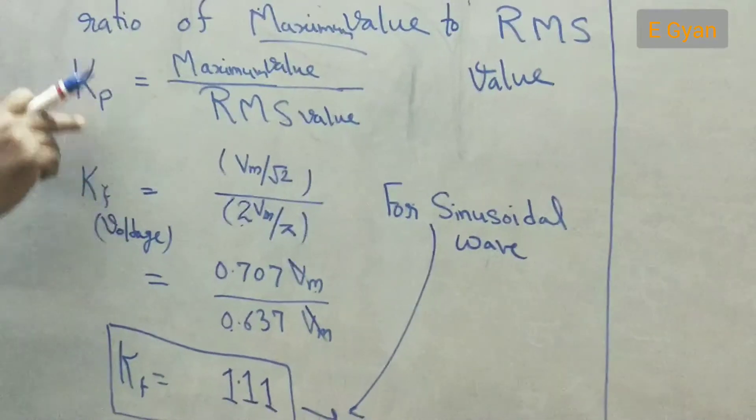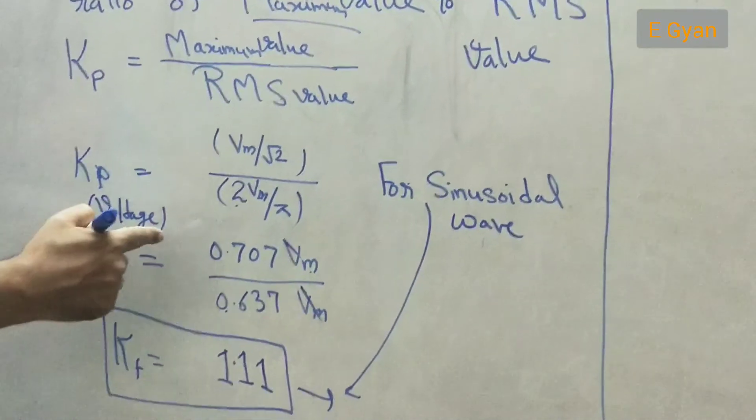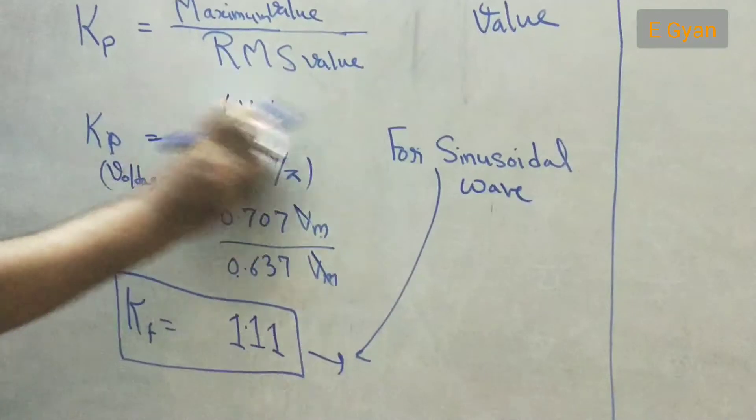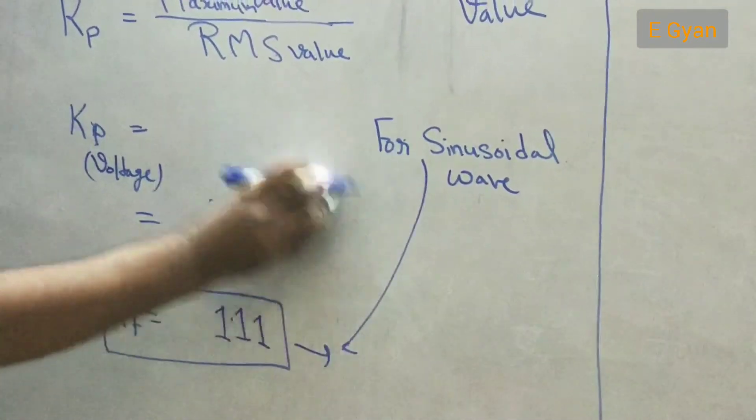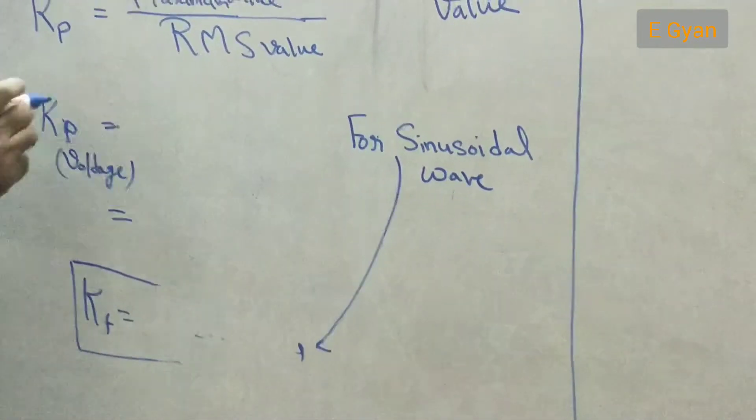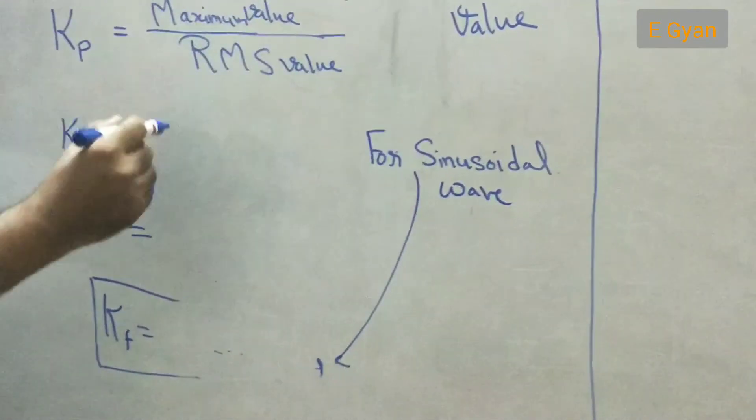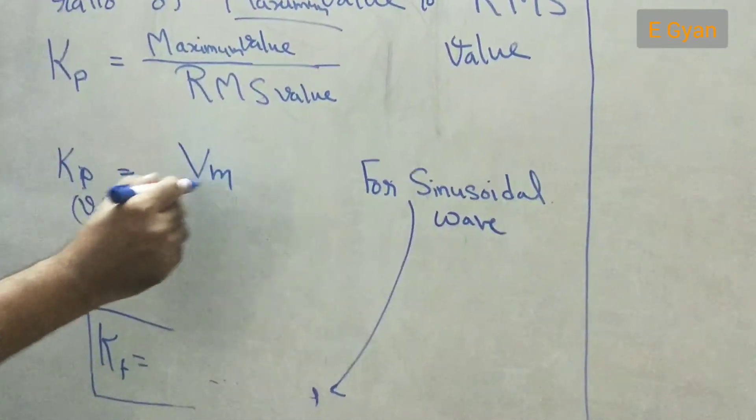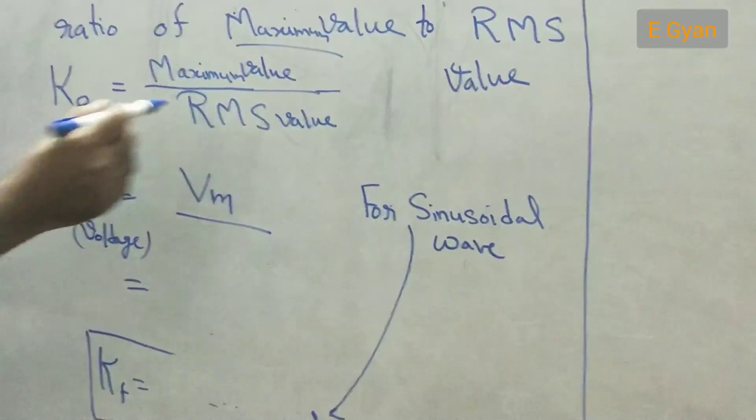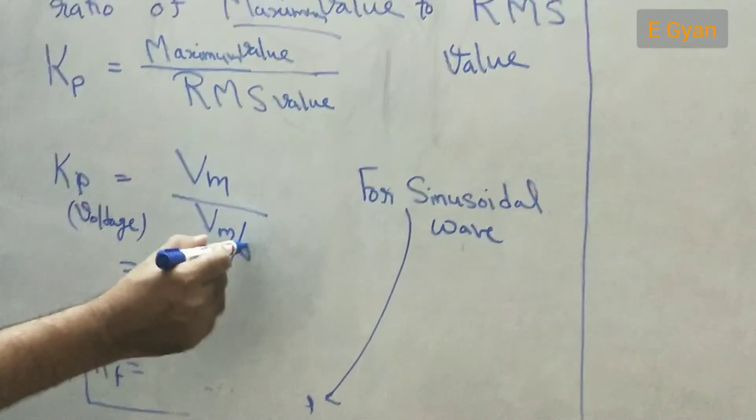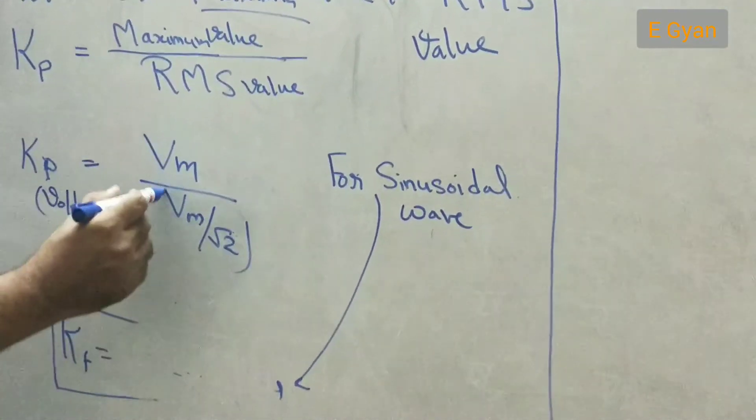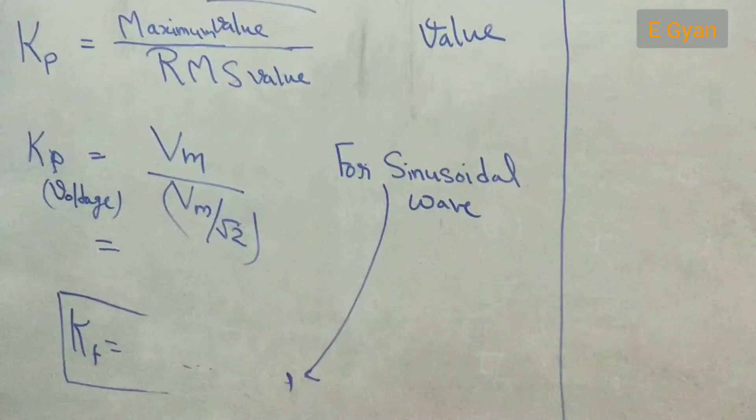Now again we are calculating this Kp for voltage quantities. So how can I write it? I can write this Kp as maximum value. What is maximum value? It is denoted by Vm. Maximum value is Vm. And what is RMS value? The formula for RMS value as we had already derived it. It is Vm upon root 2 that is maximum value upon root 2.